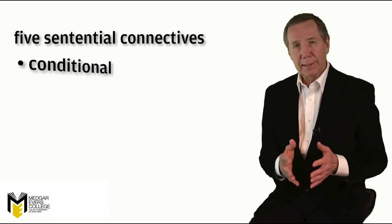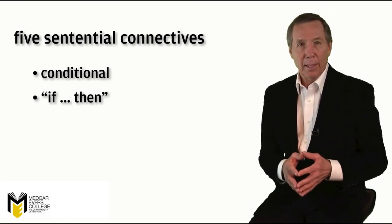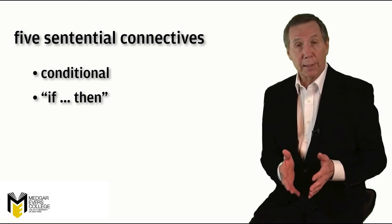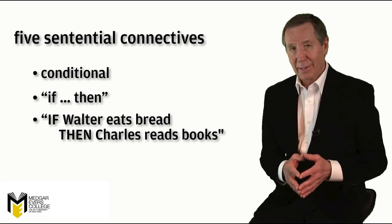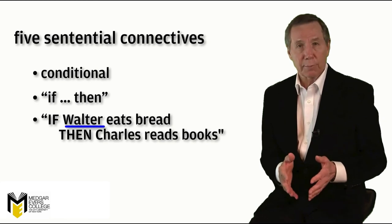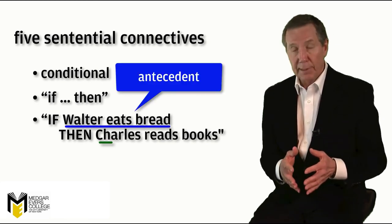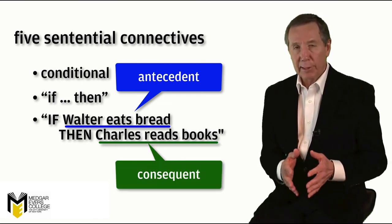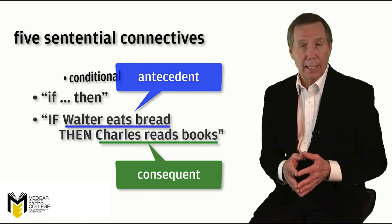Fourth, the conditional, expressed in English by the use of 'if' and 'then.' We could place our two atomic sentences in a conditional relationship as follows: 'If Walter eats bread, then Charles reads books.' The sentence that follows the 'if' — in this case 'Walter eats bread' — is called the antecedent. The sentence that follows the 'then' — in this case 'Charles reads books' — is called the consequent. Every conditional sentence will always have these two parts, the antecedent and the consequent.